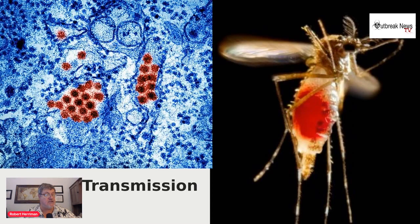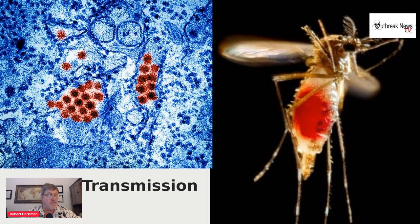Aedes aegypti is the principal dengue vector responsible for dengue transmission and dengue epidemics. Other mosquito species in the genus Aedes, including Aedes albopictus, also have the ability to serve as dengue vectors. These are the same types of mosquitoes that spread Zika virus and chikungunya viruses. Once infected with dengue, the mosquito will remain infected for its entire life and can continue to transmit the virus to healthy people — generally about three to four weeks.